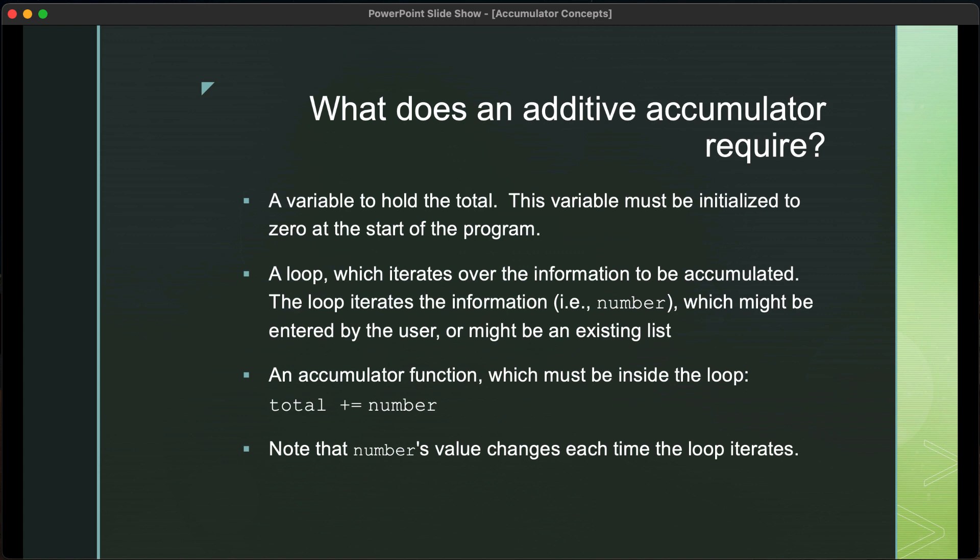You also need to have a loop, which iterates over the information to be accumulated. The loop iterates, for example, the information. So if we're using a variable called number, that information for that variable might be entered by the user or it might be an existing list. The example we're going to do in here will be entered by the user.